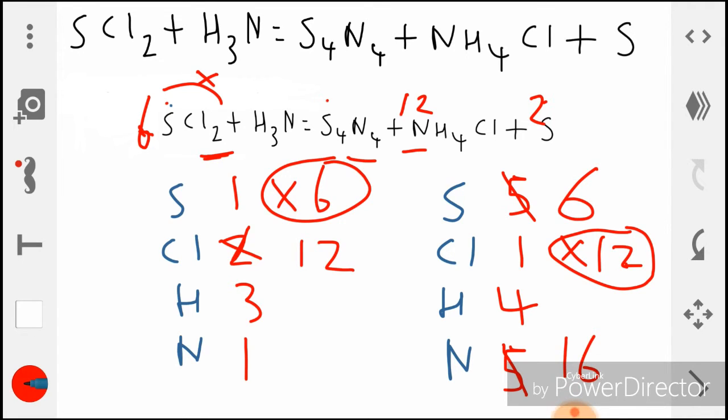Now that side we'll forget about for a minute. There are four H's over here originally, but now 12 times 4 will become 48. And how do we get from 3 to 48? That would be times by 16, and this would be times by 16 as well.